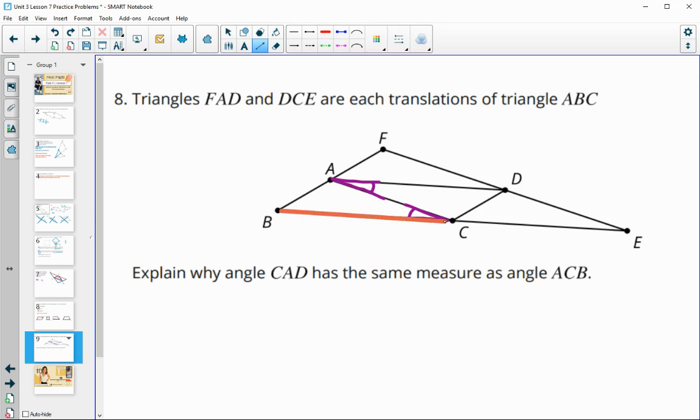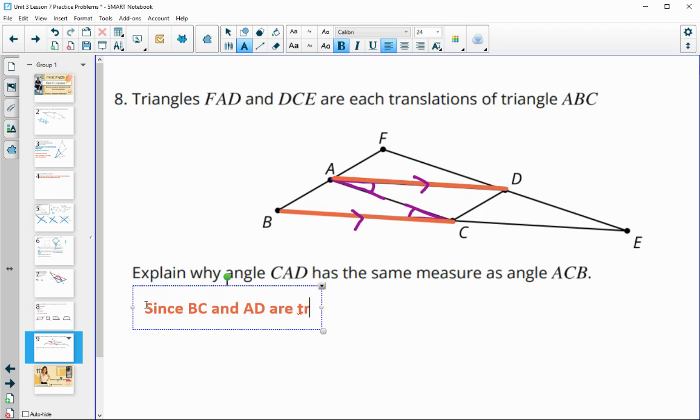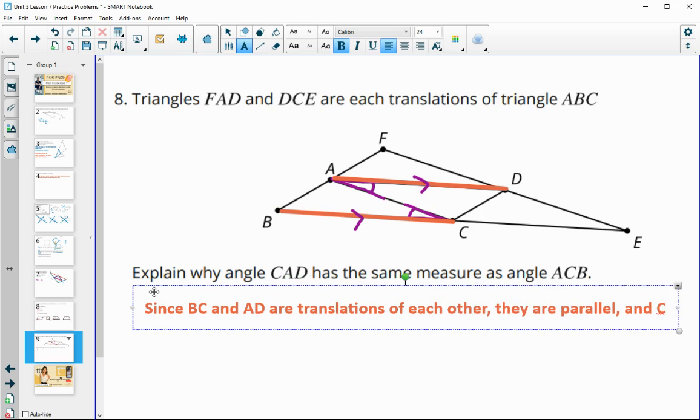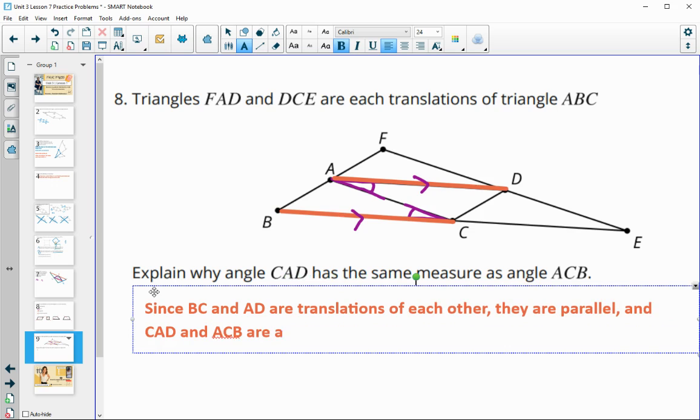So when we did the translation of this triangle, we know that translations take lines parallel to each other. So since this AD was a translation of BC, we know that those two lines are parallel. And then we know that CAD and ACB are alternate interior angles, so you could just write that out. So since BC and AD are translations of each other, they are parallel. And CAD and ACB are alternate interior angles, so they are congruent.